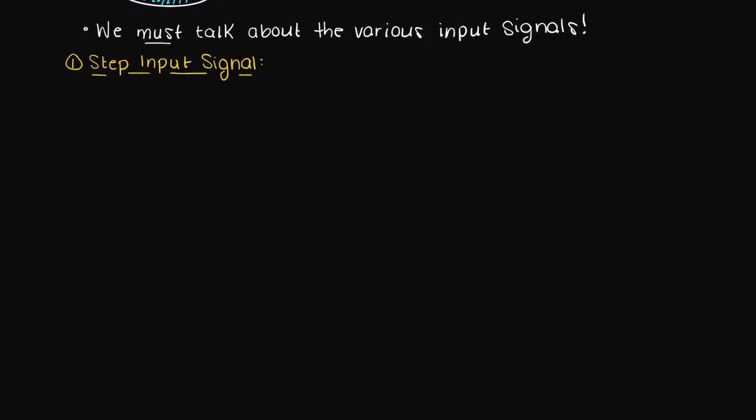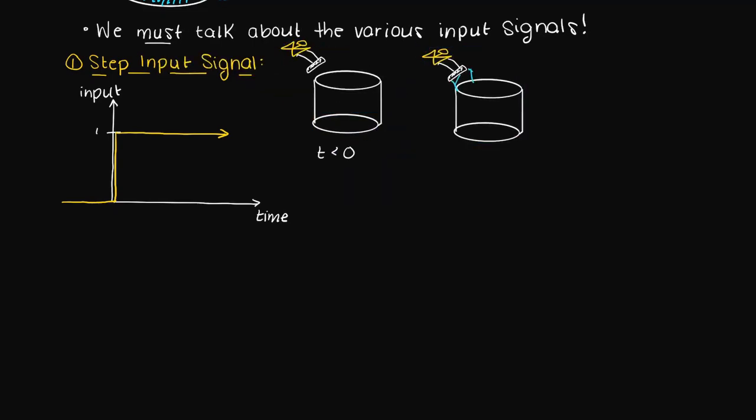The step input signal is basically the same thing as turning on a light switch. At the designated time we jump to our input and then see how the system would react. Using our earlier example you can think of this as our tap being fully opened at time zero.